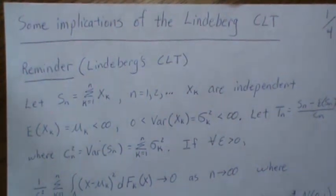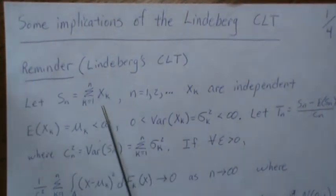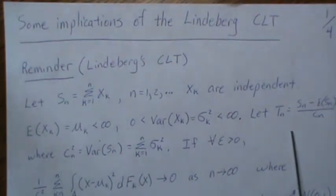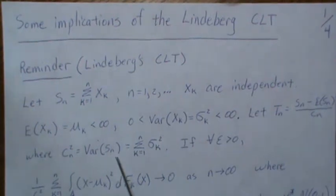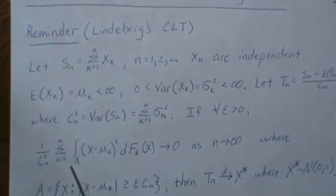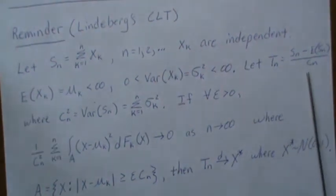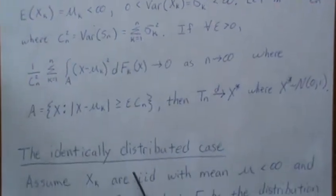In this video we're going to look at some of the implications of the Lindenberg Central Limit Theorem. As a quick reminder, the theorem says that if we sum X_k and they're independent with finite mean and finite variance, then the quantity T_n — where c_n is the standard deviation of the sum's variance — satisfies: for every epsilon, as n goes to infinity, integrating over that region, T_n converges in distribution to a standard normal random variable.